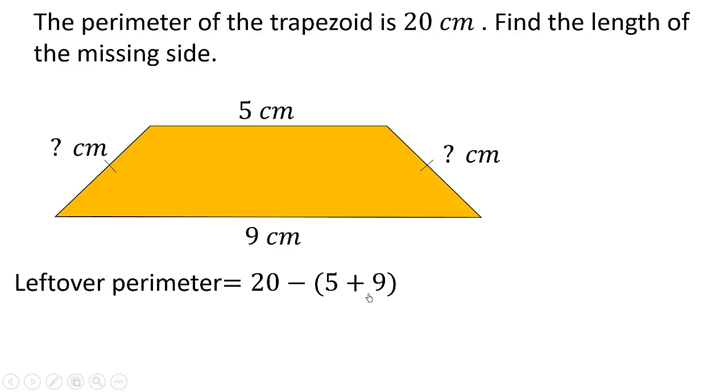Notice that this symbol here tells us that this side is equal to this side. So adding this and this will give us the leftover perimeter which is 6.